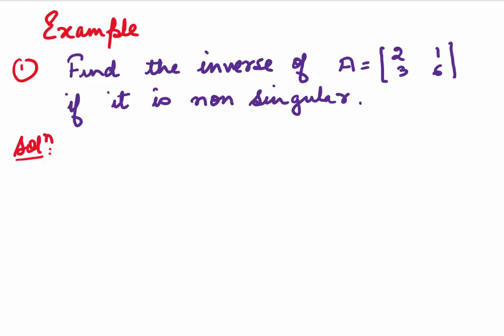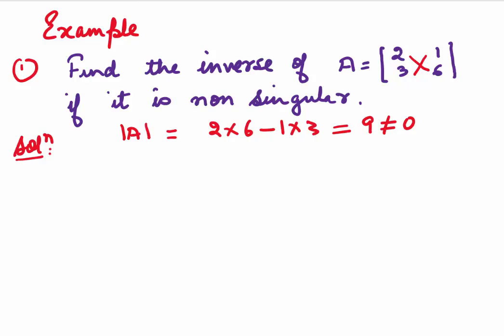Let's come to some examples. In the first example, we are asked to find the inverse of matrix A = [2, 1; 3, 6], which is of order 2, if it is non-singular. To check whether the matrix is non-singular, we find the determinant. For a 2×2 matrix, the determinant is 2×6 − 1×3 = 9, which is non-zero, so our matrix is non-singular and we can find the inverse.